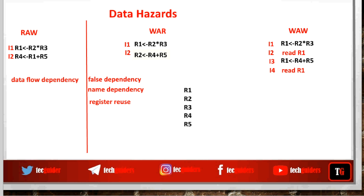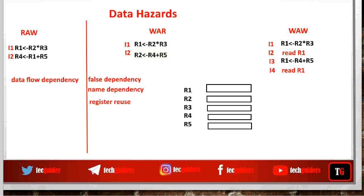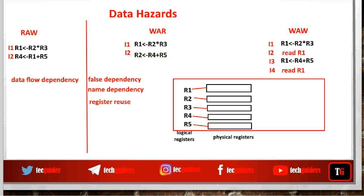Usually the instruction set architecture provides a limited number of registers with which the program should be built up. But these are just register names — in other words, logical registers. For each logical register there exists one physical register, which is the actual physical storage location. The program is built up using logical registers, and while the instructions are under execution, these logical registers are mapped to their corresponding physical registers.